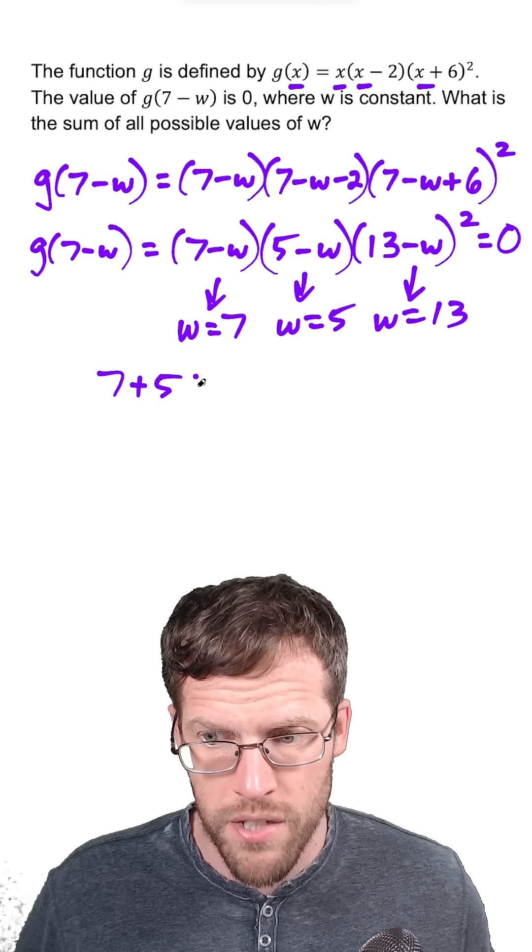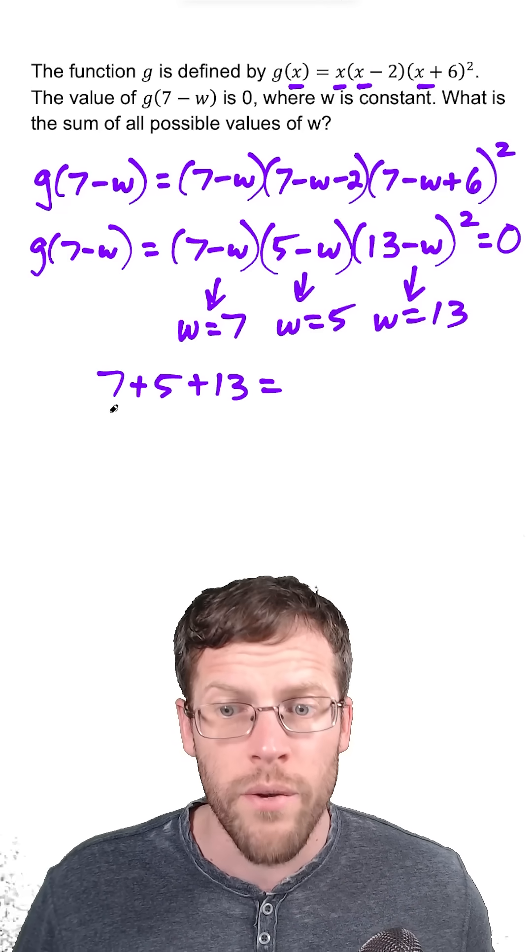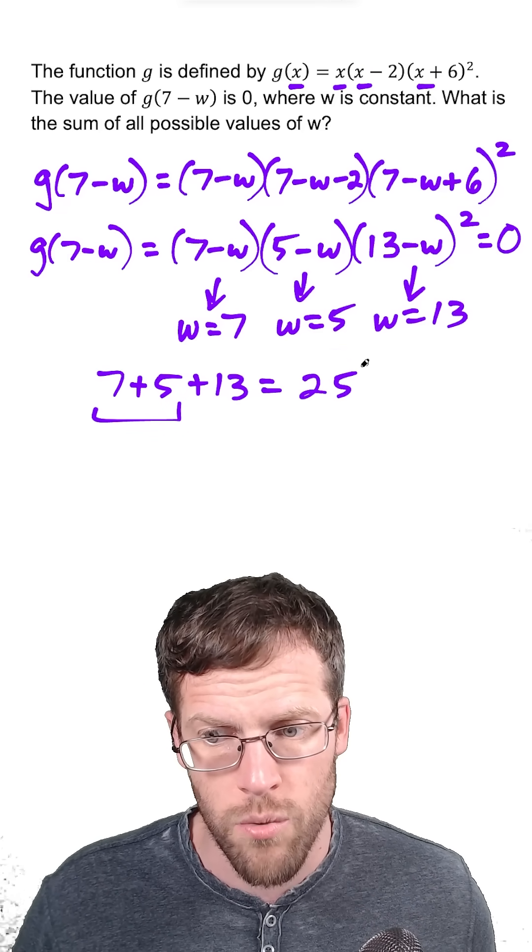And now the sum of the possible values here, we just add up these three roots. We get 7 plus 5 is 12, plus 13 is 25.